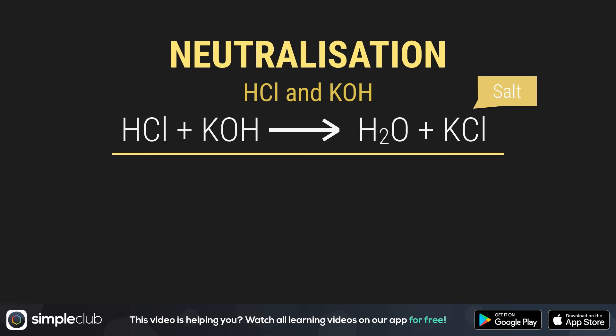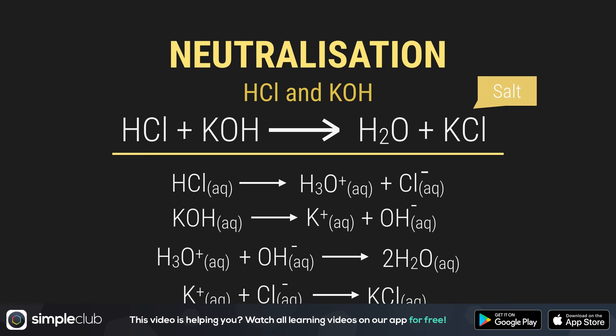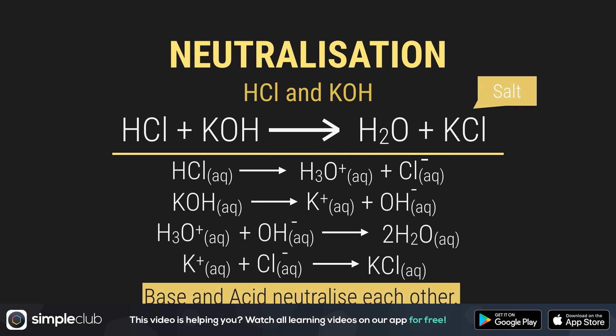First of all, HCl in water goes to H3O-plus and Cl-minus. KOH dissolves in water to K-plus and OH-minus. Then the oxonium ions react with the hydroxide ions to make two molecules of water. K-plus reacts with Cl-minus to make KCl, or potassium chloride. If we mix together exactly the same amount of hydrochloric acid as potassium hydroxide, then our solution is neither acidic nor basic. The base and the acid neutralize each other — that is why the whole process is called neutralization.